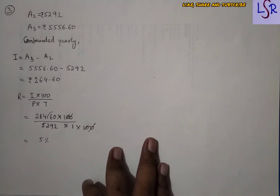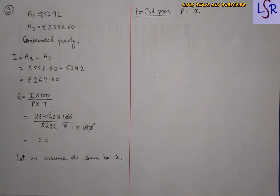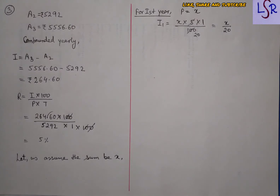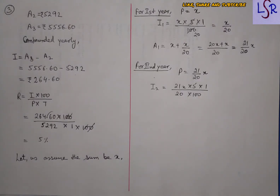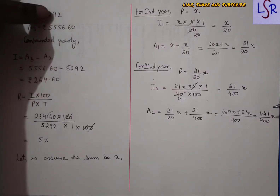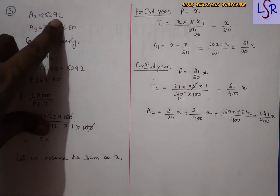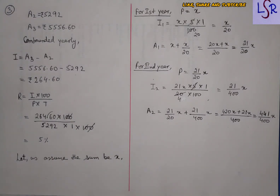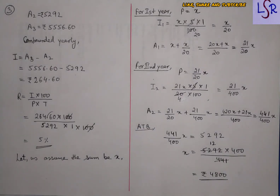Now we find the principal. Let the principal be X. For the first year, the interest is X/20 and the amount becomes 21X/20. This amount becomes the principal for the second year. The interest for the second year is 21X/400, giving an amount of 441X/400. This equals the given amount of 5292, so equating 441X/400 = 5292, we get X = 4800.